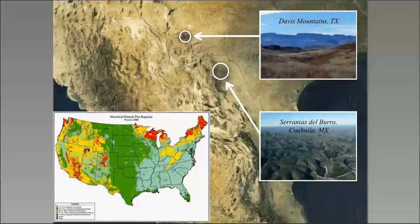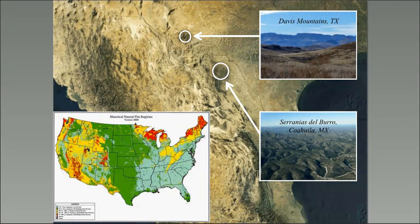The Davis Mountains lies to the north of Big Bend National Park, and the Serrania del Burro is about 150 kilometers southeast of Big Bend National Park — between the two, it's about 150 miles. I also wanted to emphasize the natural fire regimes for these areas, ranging between categories one and four, which shows what a mosaic the fire patterns can be in those areas.